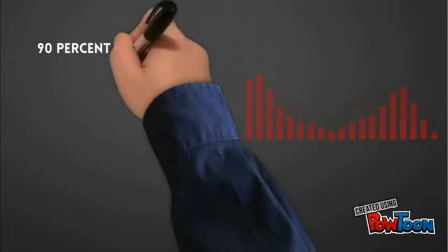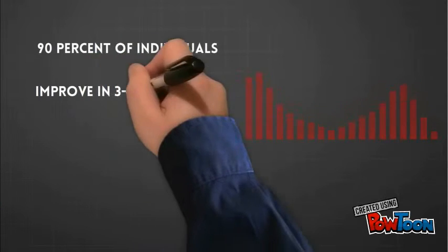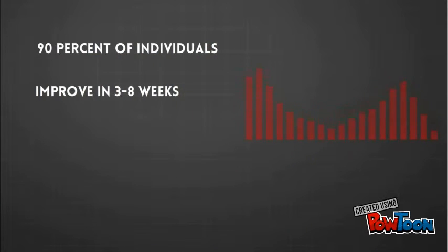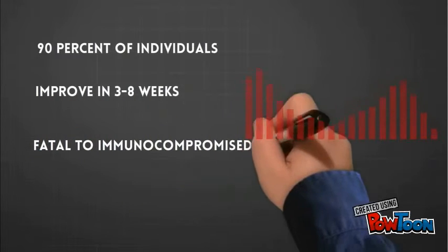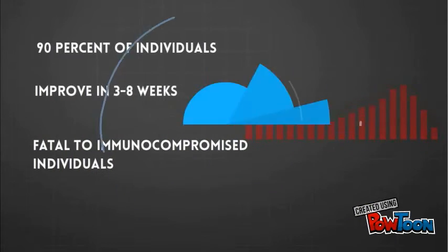During this phase, 90% of the individuals affected seem to gradually improve over a period of 3 to 8 weeks. However, this disease in this phase has been shown to be fatal only to immunocompromised individuals.